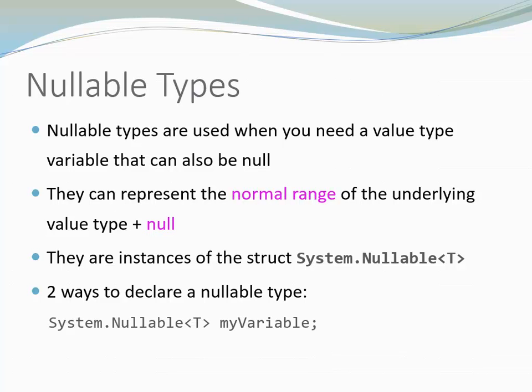One is by using System.Nullable<T> and then a variable name, or alternatively you could say T question mark. This is a shorthand for System.Nullable<T>. Important is that the type T needs to be a value type, for example int.